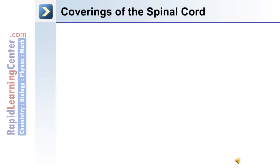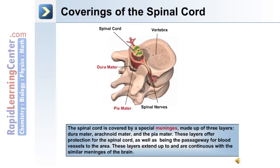The spinal cord and brain have special coverings made up of three layers, known as the meninges. The three layers are the dura mater, the arachnoid mater, and the pia mater. These layers offer protection for the spinal cord as well as serving as a passageway for blood vessels. The layers extend up to and are continuous with the meninges of the brain.